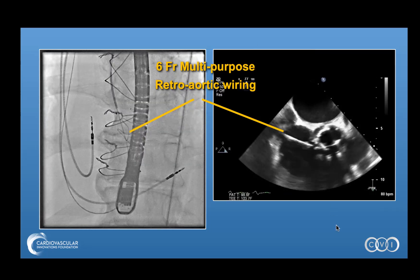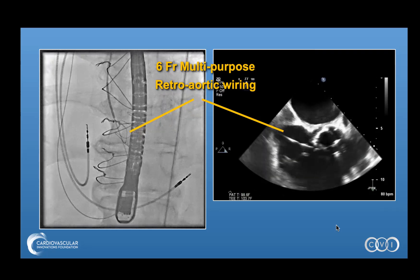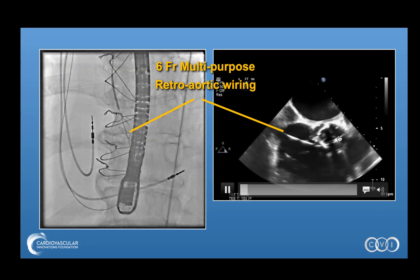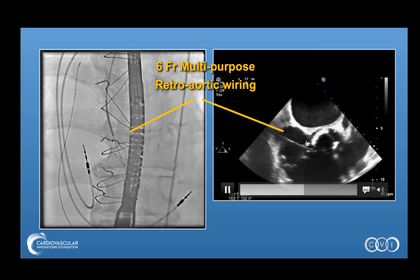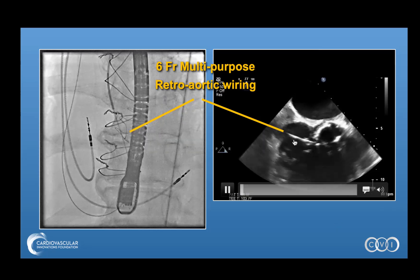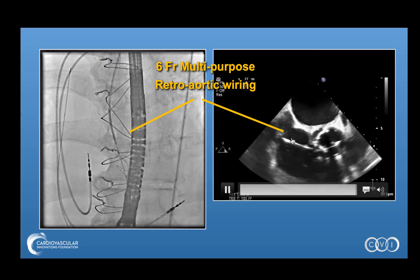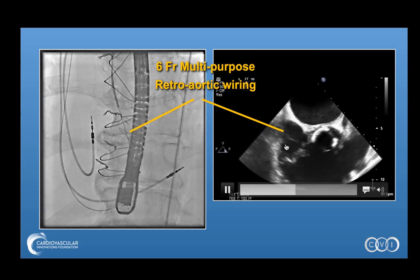Here's a TEE short axis view showing the aortic valve prosthesis and the wire that has entered through the fistula into the right atrium.